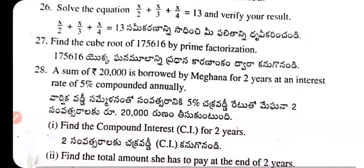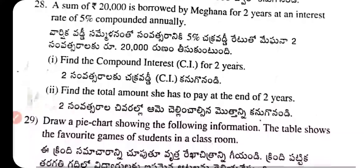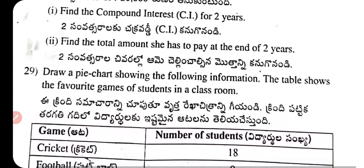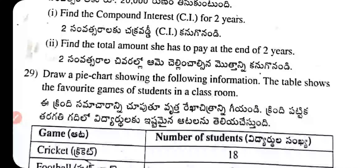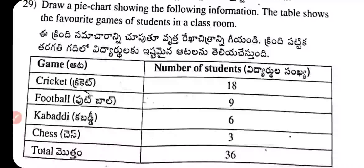Question 26: Solve the equation x/2 + x/3 + x/4 = 13 and verify your result. Question 27: Find the cube root of 175616 by prime factorization method. Question 28: A sum of ₹20,000 is borrowed by Magna for 2 years at an interest rate of 5% compounded annually. Find the compound interest for 2 years and the total amount she has to pay at the end of 2 years.